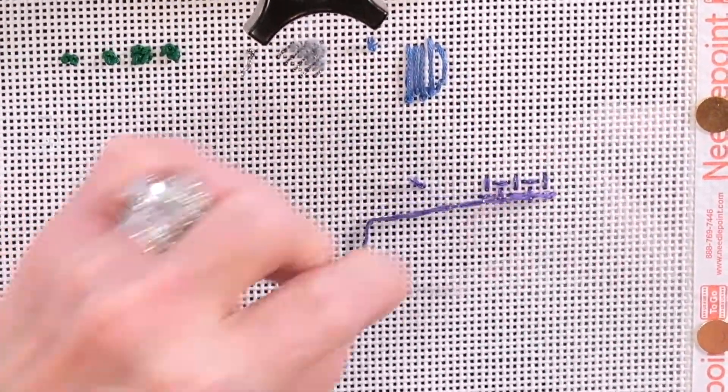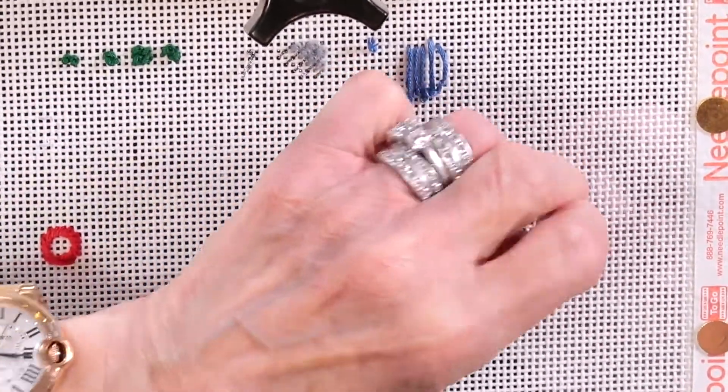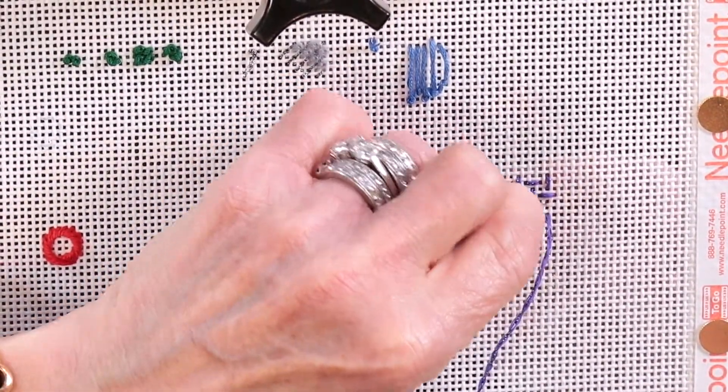But you can, as you see, you can just do it. And this is called a poke and pull method of stitching where one hand is underneath and one hand is on top.